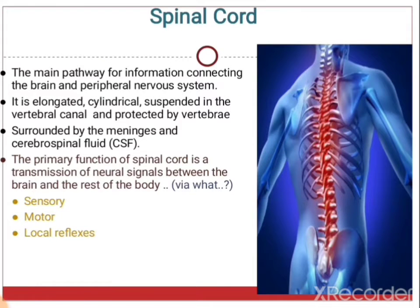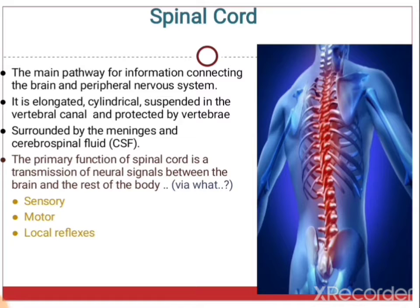The spinal cord is the main pathway for information connecting the brain and the peripheral nervous system. It is elongated and cylindrical, suspended in the vertebral canal and protected by vertebrae. It is surrounded by meninges and CSF. The three functions of the spinal cord are transmission of nerve signals between the brain and the rest of the body via sensory, motor and local reflexes.